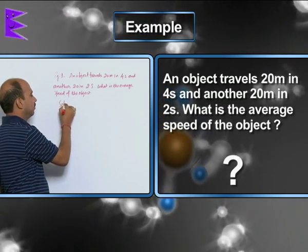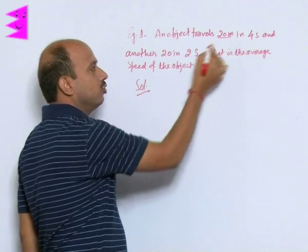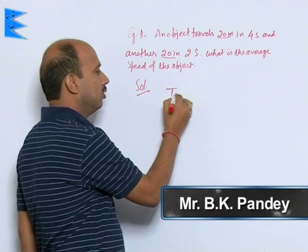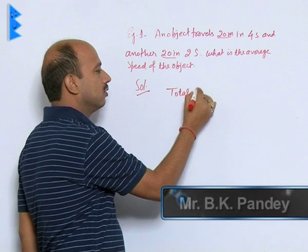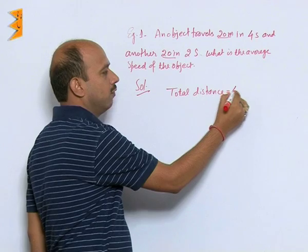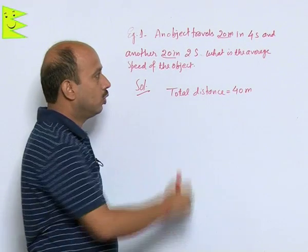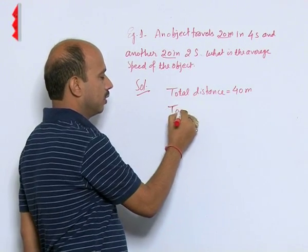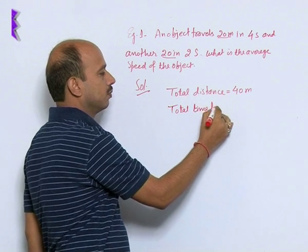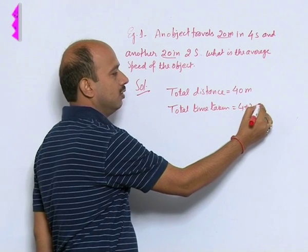To solve this, first find total distance: 20 meters plus 20 meters equals 40 meters. Then find total time: 4 plus 2 equals 6 seconds.